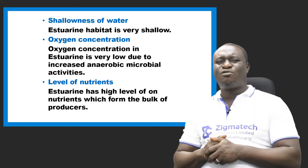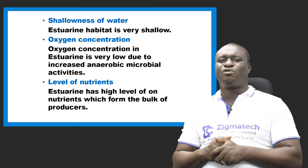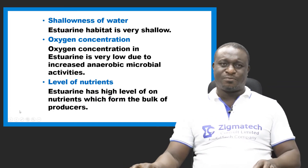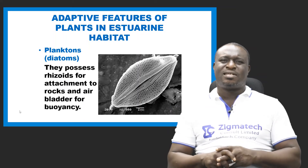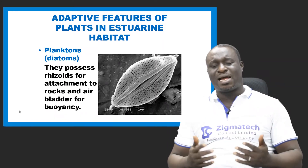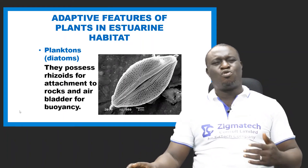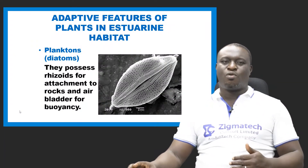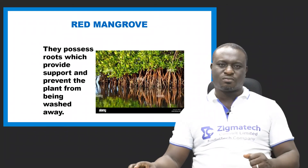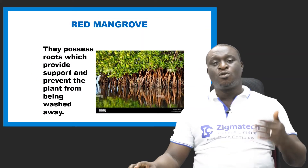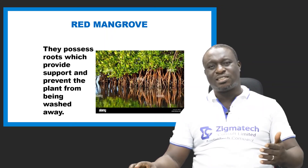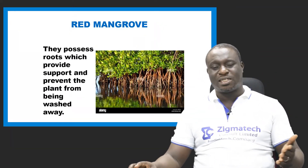Oxygen concentration in estuarine habitat is low, due to increased anaerobic microbial activities — there are more microorganisms that respire anaerobically. The level of nutrients in estuarine habitat is high. In Nigeria, you can find estuarine habitats and mangrove swamps in Rivers State, Bayelsa, Delta State, and Akwa Ibom.